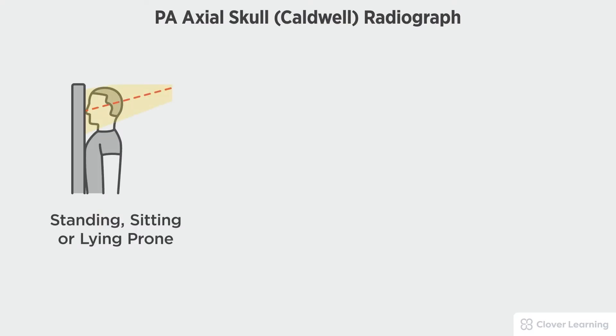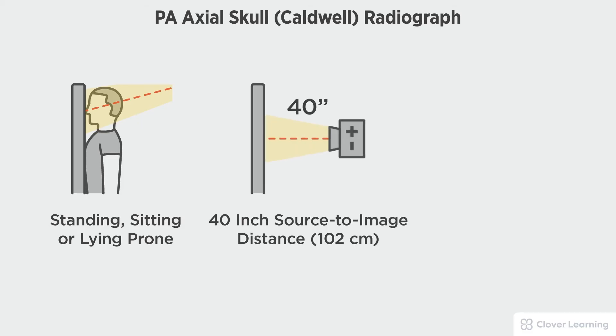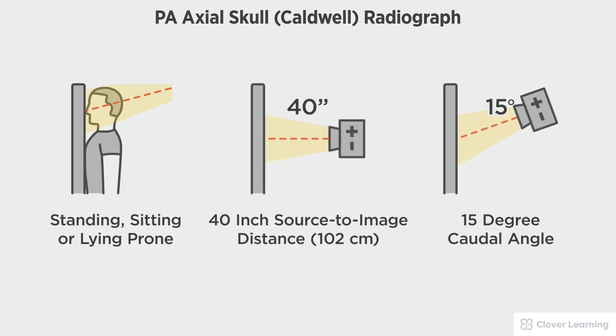In this view we will be demonstrating the PA Axial Skull Caldwell view. The PA Axial Skull Caldwell view should be performed with the patient standing or sitting at the upright bucky or lying prone on the table with a 40-inch source to image distance and a 15-degree caudal tube angulation.